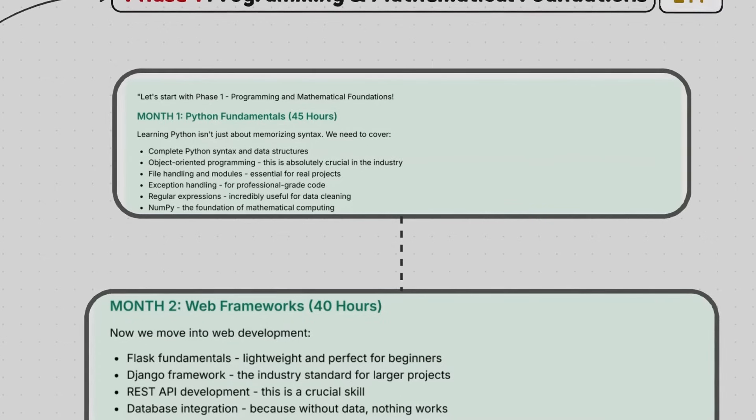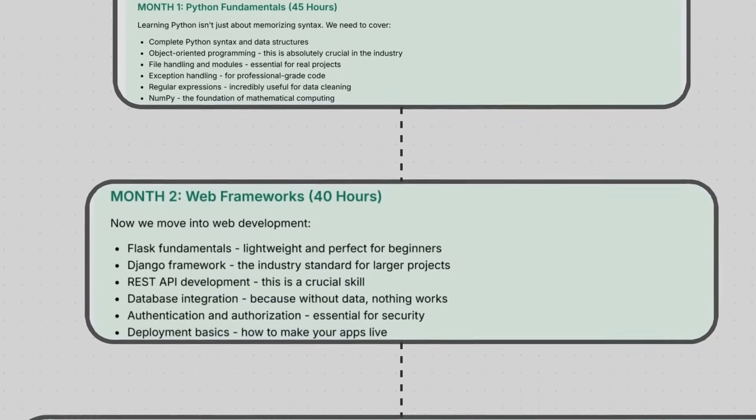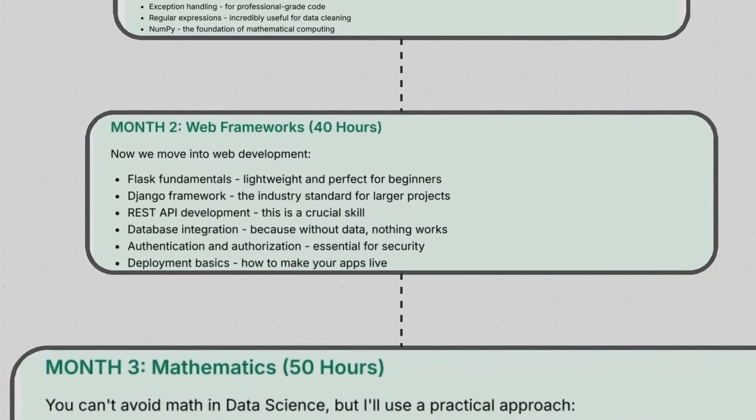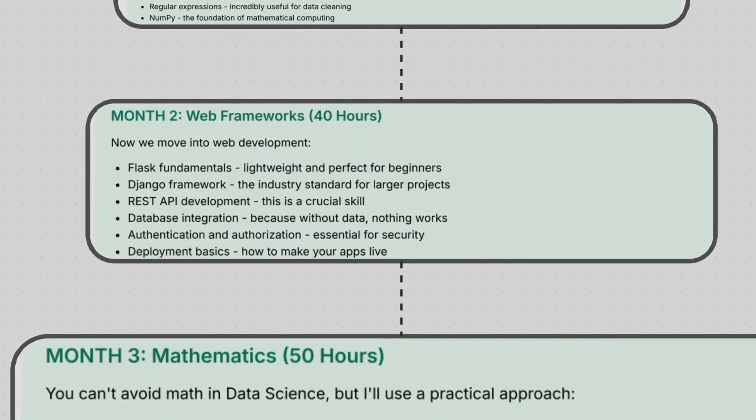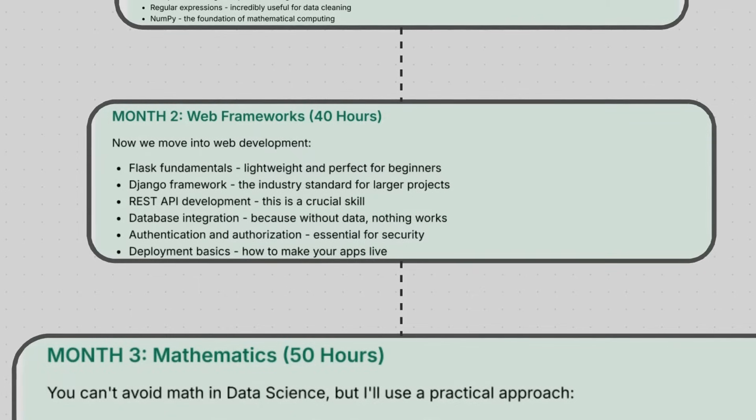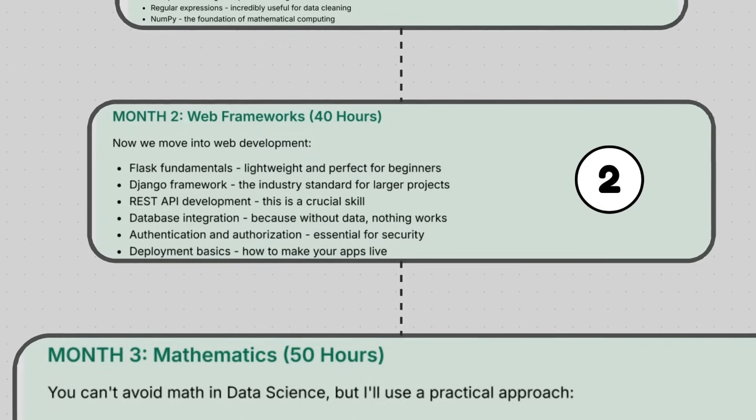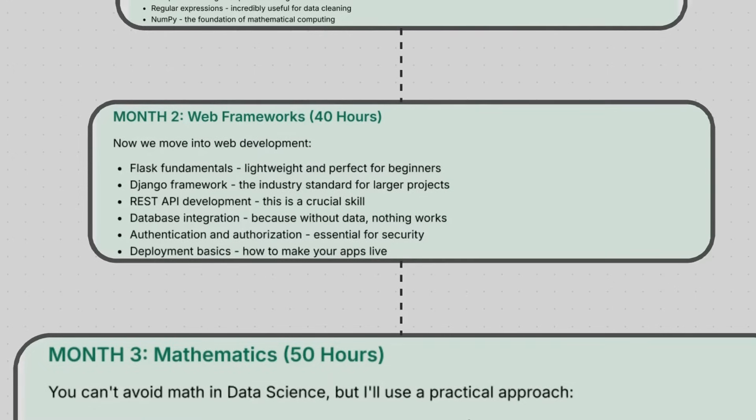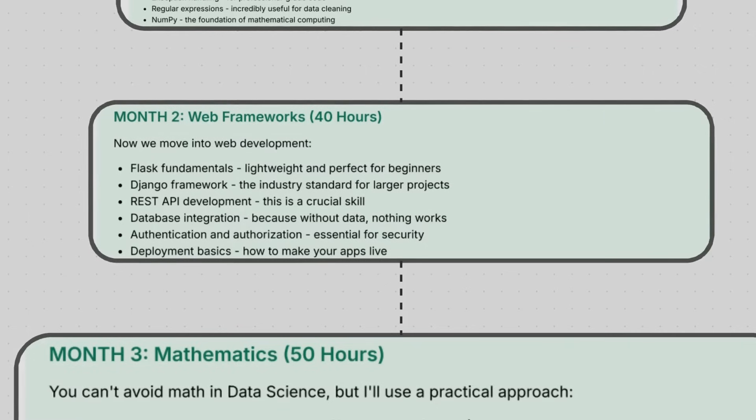After covering this basic language, we will cover the web frameworks. A lot of students want to build various websites and get into web development with the help of Python. For those students, we will talk about Flask, how you can build lightweight and perfect things using Flask. Second is Django framework and Flask framework, very popular in the industry. Thereafter we'll talk about REST API development, database integration, authentication, and authorization. So all these topics we will include in web frameworks and this will be covered in the second month.